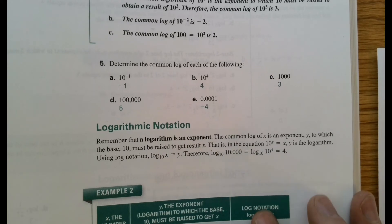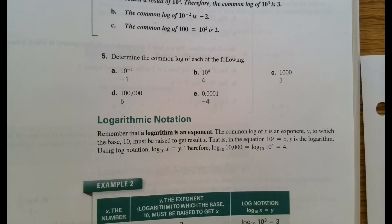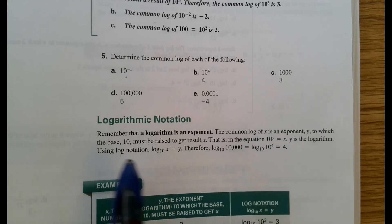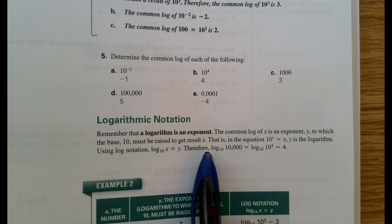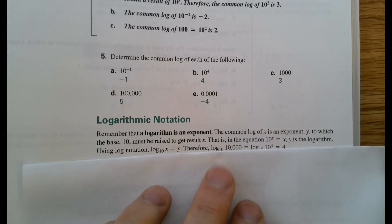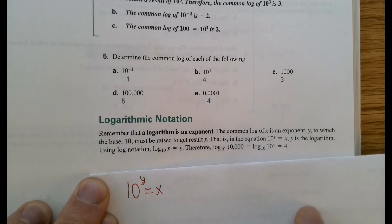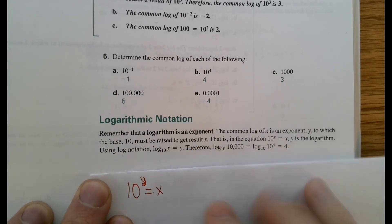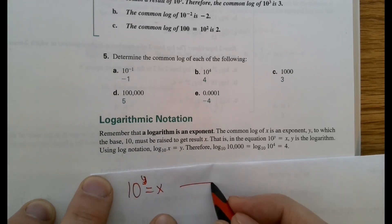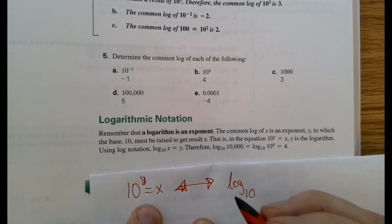So here comes the notation. Remember that a logarithm is an exponent. That's a key point. Put that in your brain forever. We evaluate a logarithm of some number. We're wondering what is the exponent of that number. So the common log of x is an exponent y to which the base 10 must be raised to get result x. That is, if we have the equation 10 to the y equals x, let me write this, 10 to the y equals x. Y is the logarithm because it's the exponent of this equation. So we're going to use the log notation. This thing can be rewritten as log, common log, it has this base 10 of it, of whatever this x is, is equal to that exponent y.